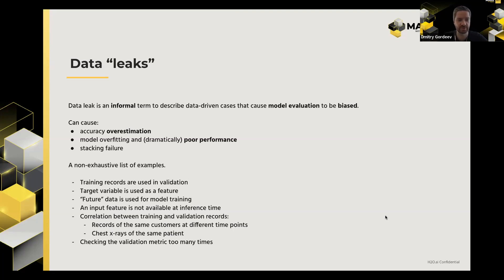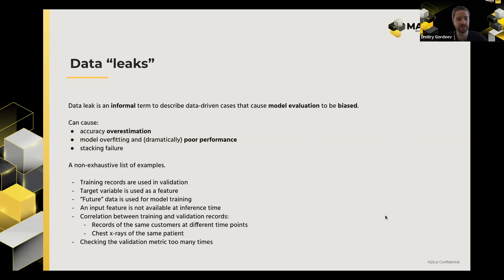Data leaks can take many forms. First, training records used in validation — this happens, unfortunately, more frequently than we'd like, sometimes due to data pre-processing routines, and will drive accuracy estimation quite high. Second, the target variable used as a feature — this happens frequently. Sometimes you have the target variable explicitly, or more often implicitly — some derived variable from the target or something very closely correlated to it — that gets included and causes the same issues.